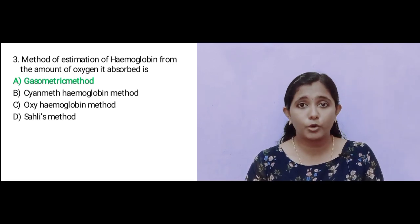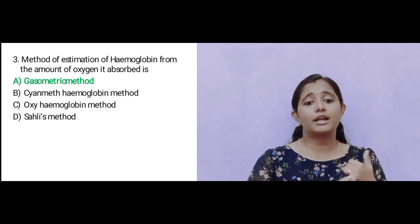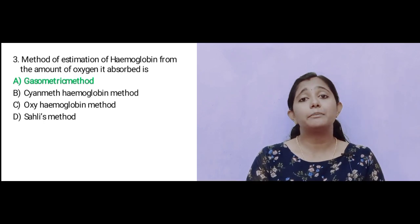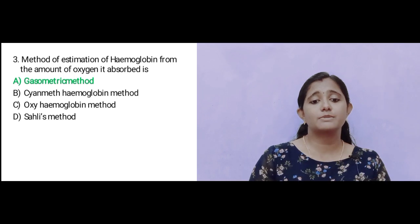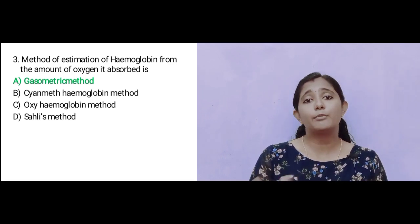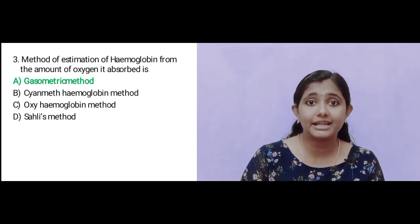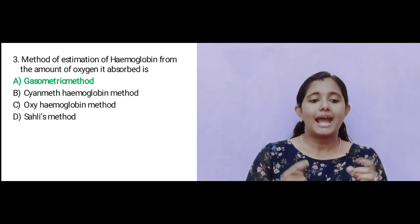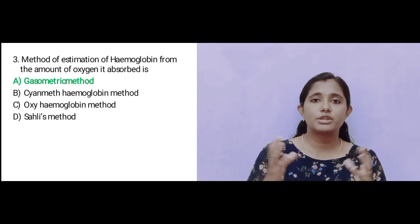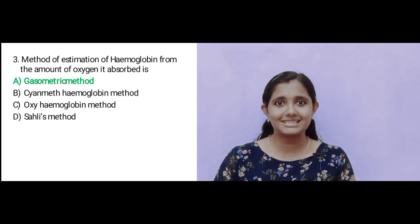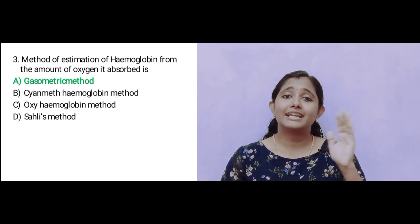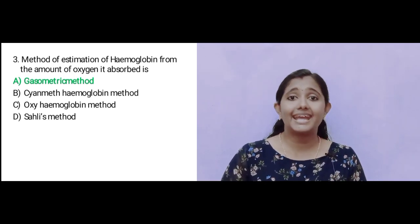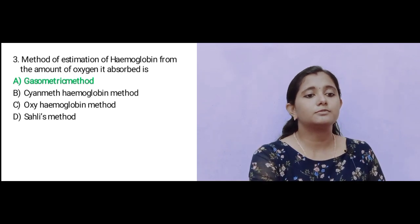In the cyanmethemoglobin method, ammonia is used. In the gasometric method, we estimate the oxygen-carrying capacity to estimate hemoglobin. The oxyhemoglobin method uses ammonia to convert oxyhemoglobin. So the answer to question 3 is Option A: gasometric method.